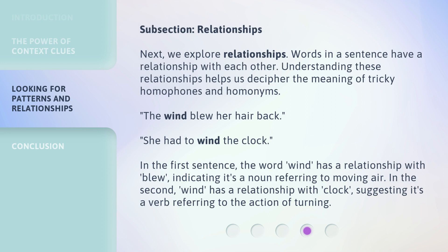Next, we explore relationships. Words in a sentence have a relationship with each other. Understanding these relationships helps us decipher the meaning of tricky homophones and homonyms. 'The wind blew her hair back.' 'She had to wind the clock.' In the first sentence, the word 'wind' has a relationship with 'blew,' indicating it's a noun referring to moving air. In the second, 'wind' has a relationship with 'clock,' suggesting it's a verb referring to the action of turning.